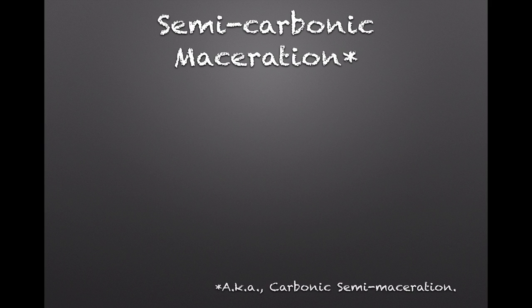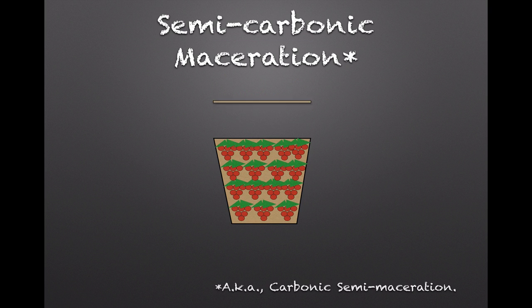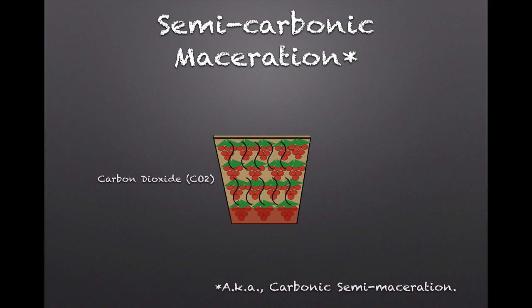Semi-carbonic maceration is done by starting with a container and filling it with whole clusters of grapes, and then putting a lid on it. The weight of the grapes will crush the clusters on the bottom and release grape juice that interacts with ambient yeast and begins a conventional fermentation, one of the byproducts of which is carbon dioxide gas. Since CO2 is heavier and denser than oxygen, as it fills the container it pushes the oxygen out through an airlock or through gaps between the lid and container, creating an anaerobic environment. These steps probably first happened accidentally early in winemaking history, but now the process is usually done intentionally and can be finessed via technology.